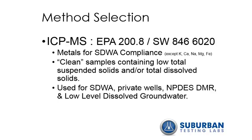The ICP-MS via methods 200.8 or 6020 is where we perform metals analysis for SDWA compliance, with the exception of those elements listed previously. It is great for clean samples containing low total suspended solids or total dissolved solids. We primarily use ICP-MS for Safe Drinking Water Act samples, sampling for private wells, wastewater NPDES discharge monitoring report required testing, and low-level dissolved groundwater. In general, we want samples analyzed on the ICP-MS to be relatively clean and when the regulatory program or limits require its use.